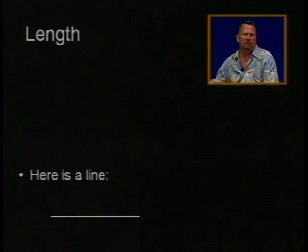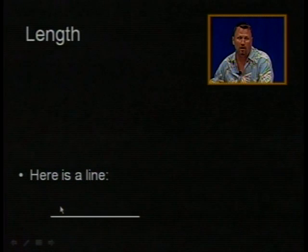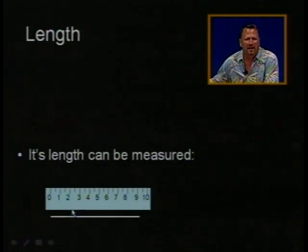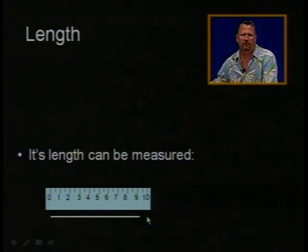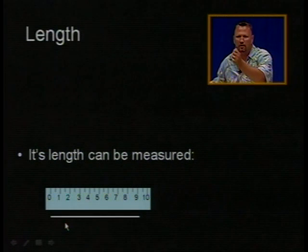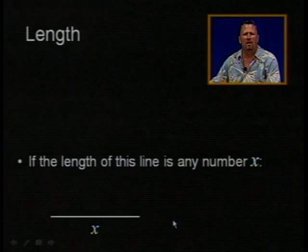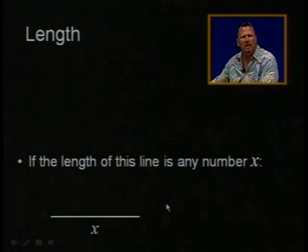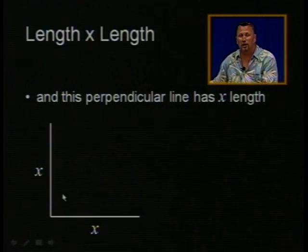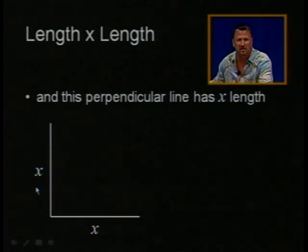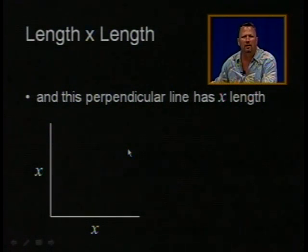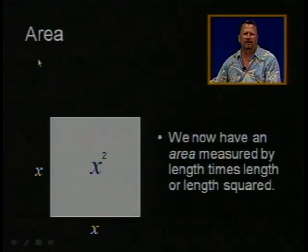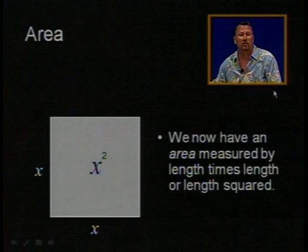Here's a line. This is a line, and it can be measured. The length of this line can be any number x. If we take another line that's perpendicular — 90 degrees — to that line, and it has the same length x, we have length times length. Now we have length squared. And that's exactly what this is: a square. This tells us the area of something. Area is measured by length times length — or length squared.